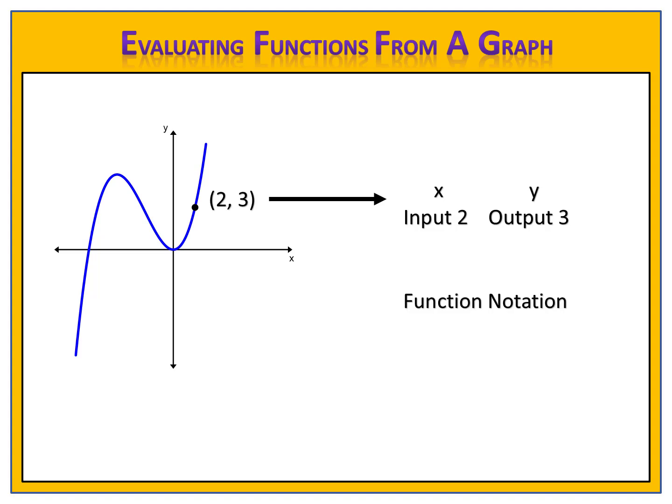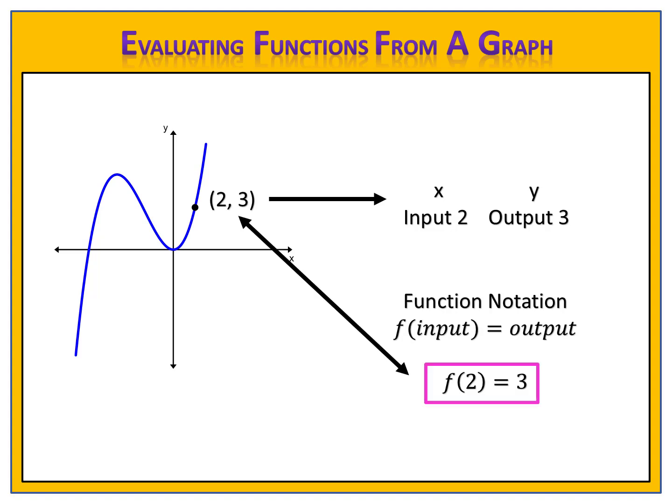We learned previously about function notation. Function notation looks like this: f equals output. Since the input is 2 and the output is 3, we can write this as f of 2 equals 3. This relationship between the function notation f of 2 equals 3 and the point on the graph is very useful, and we're going to use it a lot in this lesson.